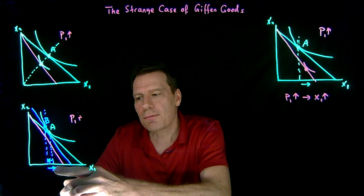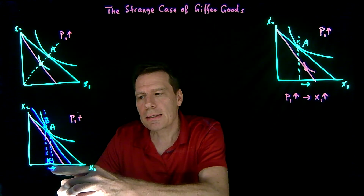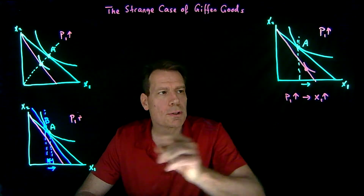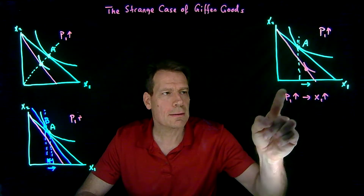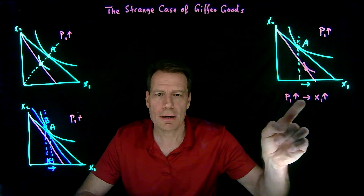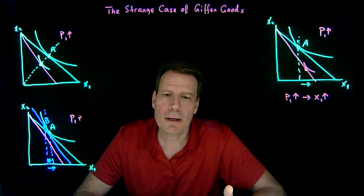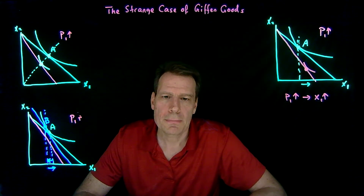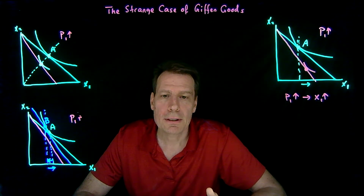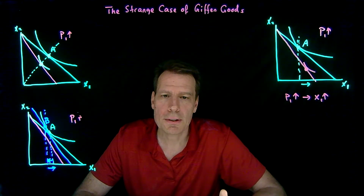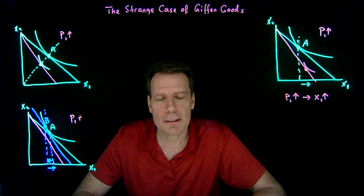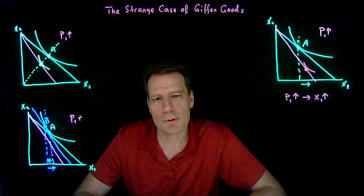The kind of inferior good where the income effect is smaller than the substitution effect — and where you don't get this Giffen phenomenon — we might call a regular inferior good. A Giffen good is also an inferior good, but it's one with a really large income effect relative to the substitution effect.